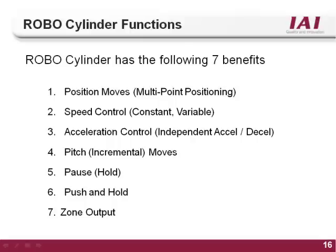The RoboCylinder controller has seven main functions that set it apart from its competition: multiple positioning, speed control, acceleration-deceleration control, a pitch or incremental style move, the pause feature, the push and hold feature, and the zone output. These are all built-in functions that give the RoboCylinder controller high functionality and flexibility. This tutorial will discuss each function and demonstrate how to implement them using the IAI RoboCylinder software.